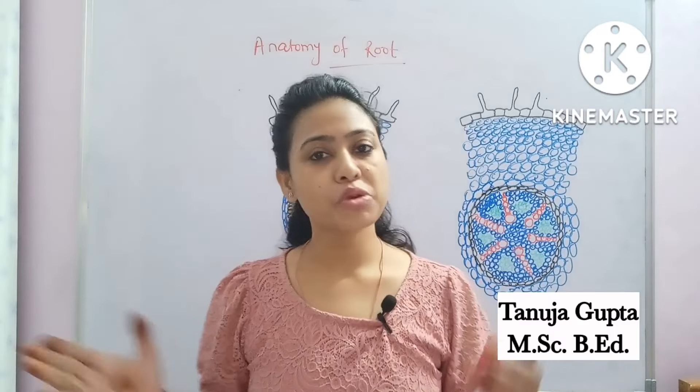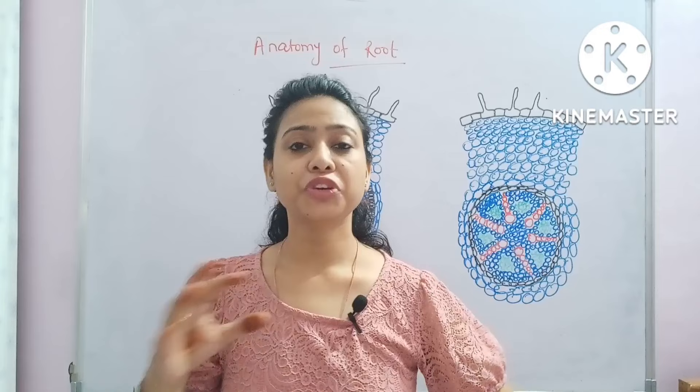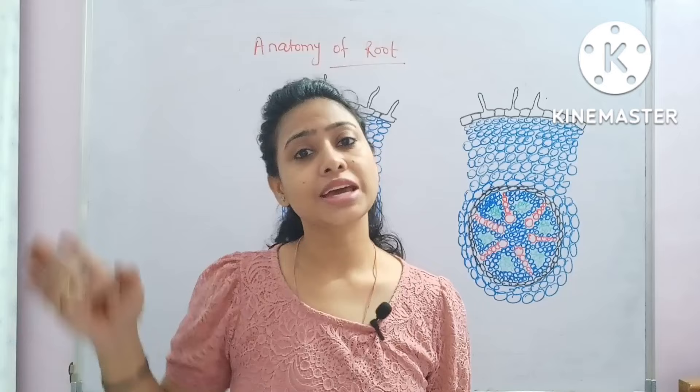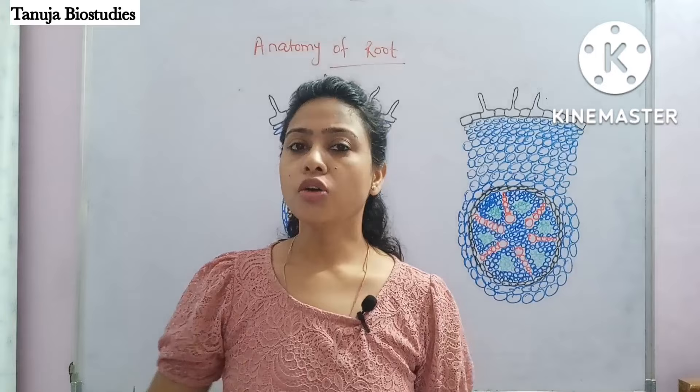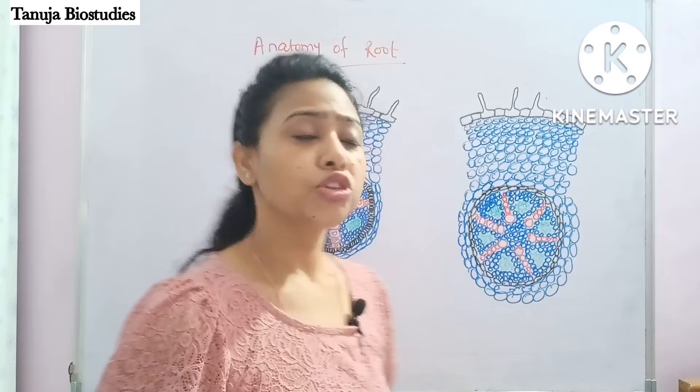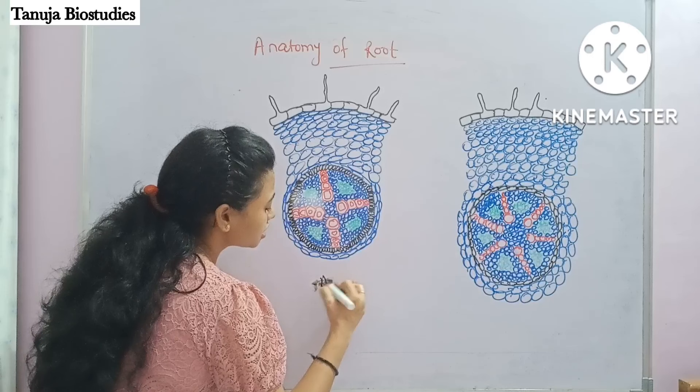Hello everyone, welcome to my channel Tanuja Bha Study. After talking about two different kinds of tissues, now let's talk about root, stem, and leaves individually. In this video we are going to talk about root anatomy. Looking at the whole plant category, we have monocot root and dicot root. I have shown you two diagrams here — this is the dicot root and this is the monocot root.